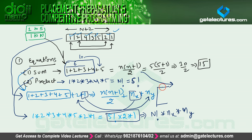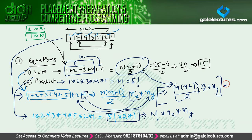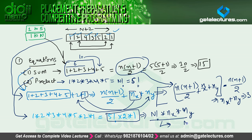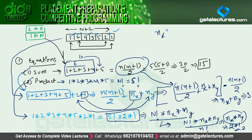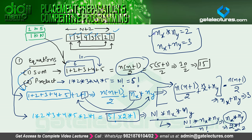To find x and y: take the array sum and subtract n into n plus 1 divided by 2, and you get nx plus ny. For the product, divide the array product by n factorial and you get nx multiplied by ny. In this particular case nx plus ny equals 3, and 2 multiplied by 1 equals 2. So we have two equations: nx times ny equals 2 and nx plus ny equals 3.